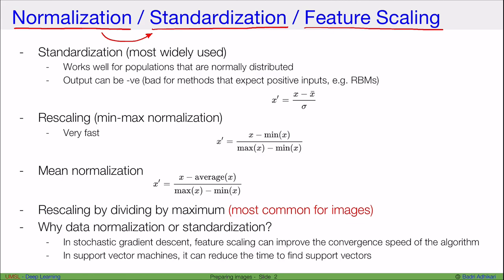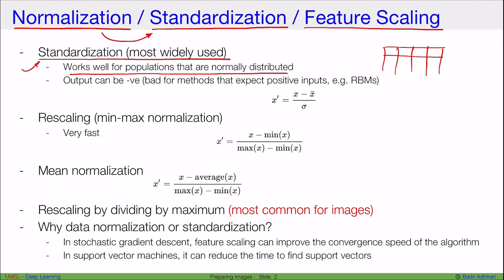Normalization can be done in different ways. If you have tabular data as input then you have a lot of options for normalization. One that is most commonly used is standardization, which is also very widely used. It works well for populations that are normally distributed, and many times we assume that the data is normally distributed and then use standardization.